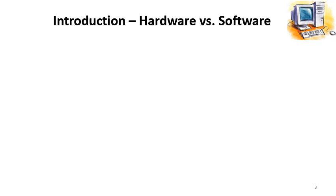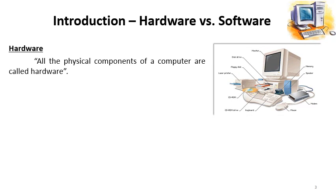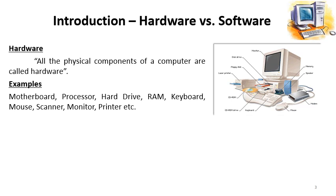Further, we will have some introduction of hardware and software. First, hardware: all the physical components of a computer are called hardware. We can also define hardware as all the tangible components of a computer, or all those components which can be touched. All these definitions are valid and correct. Examples of hardware include motherboard, processor, hard drive, keyboard, mouse, scanner, monitor, printer, etc.